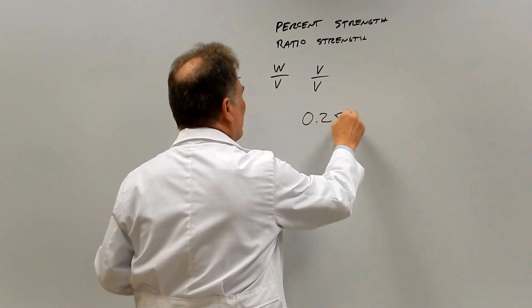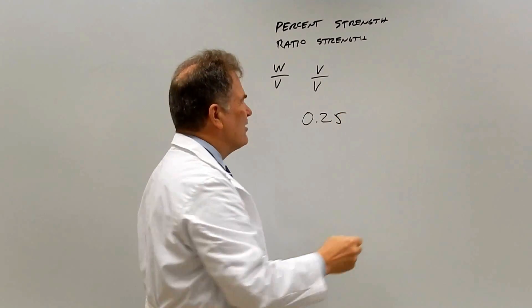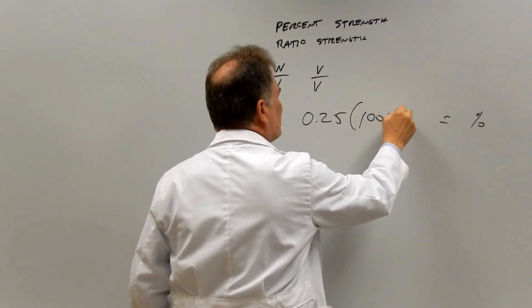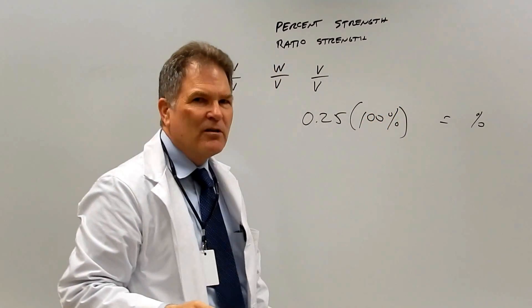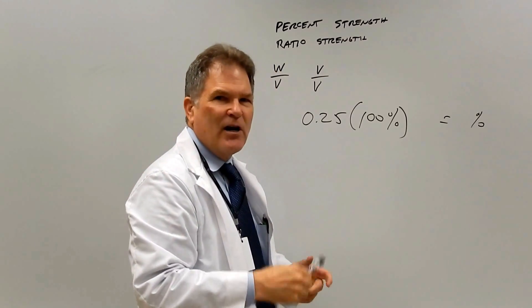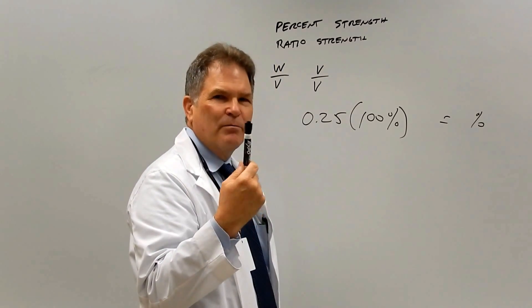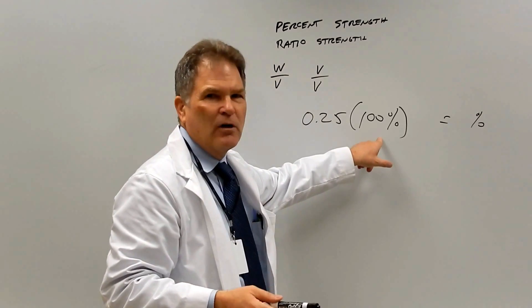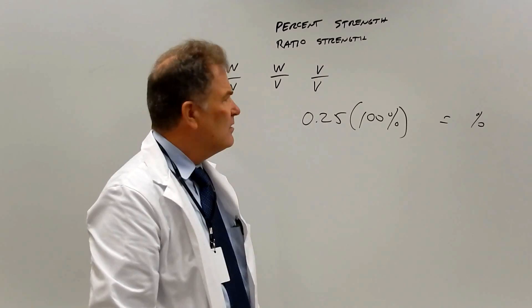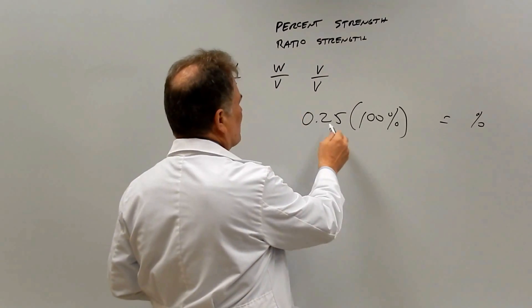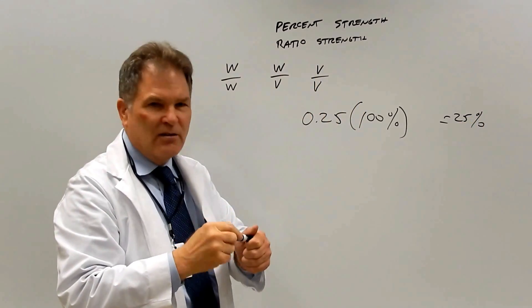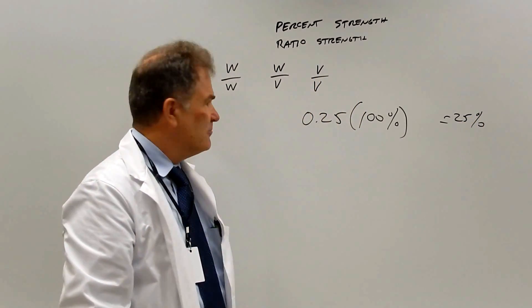If you have 0.25 and you want to change that to a percent, you multiply by 100% — not 100, but 100%. 100% of a pin is one pin, so that's equal to one. So we're multiplying 0.25 by a form of one to change the appearance. 0.25 times 100 is 25, and then the percent sign falls over into the answer.